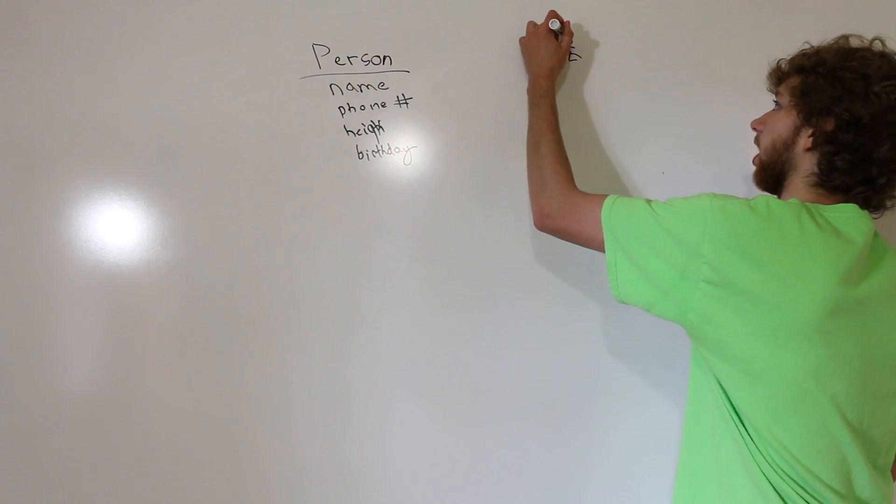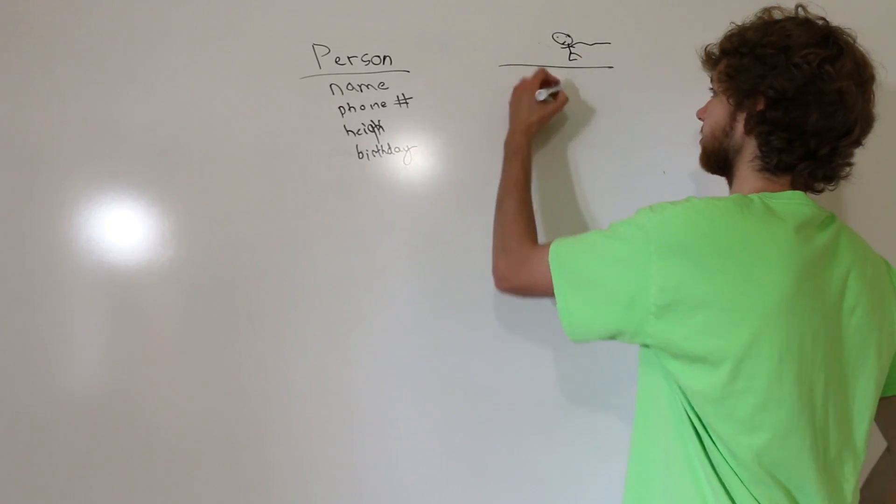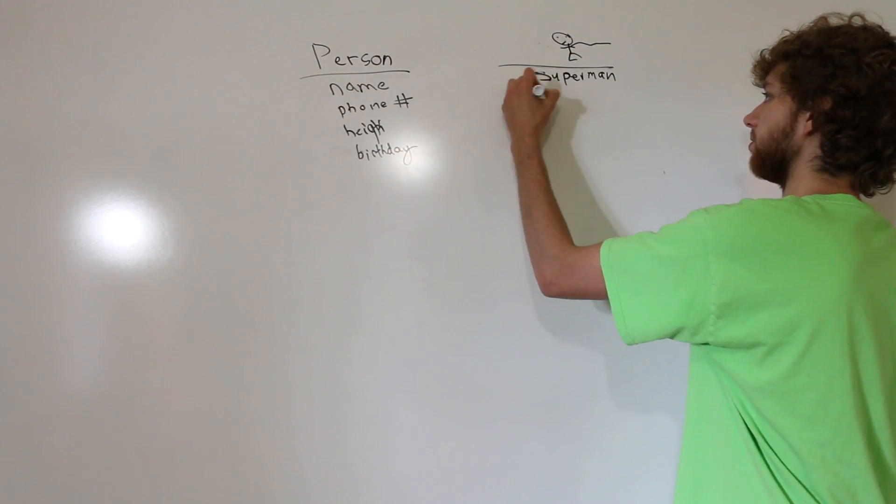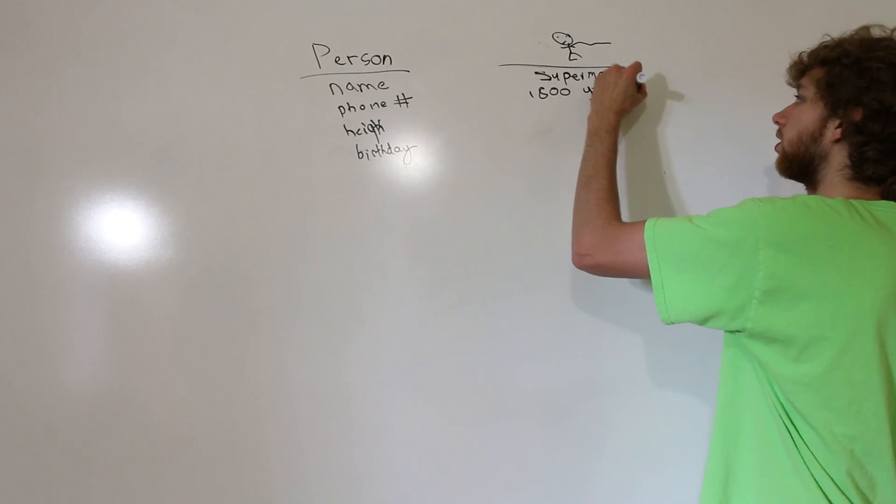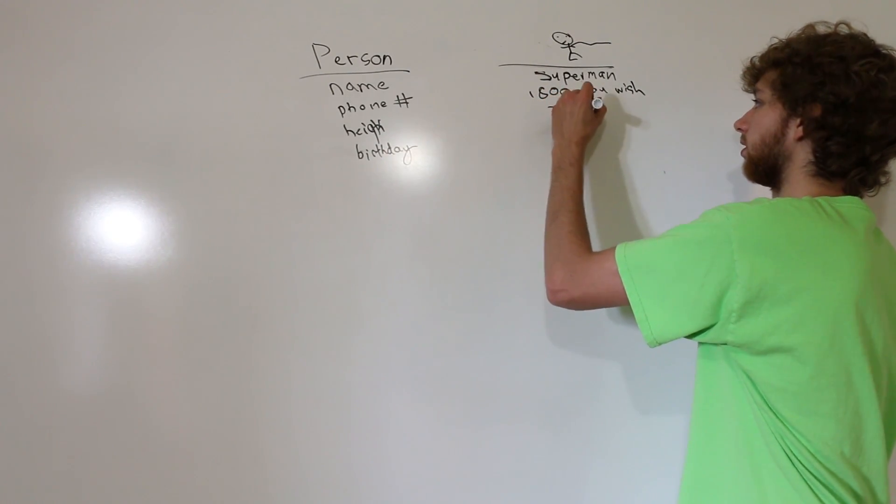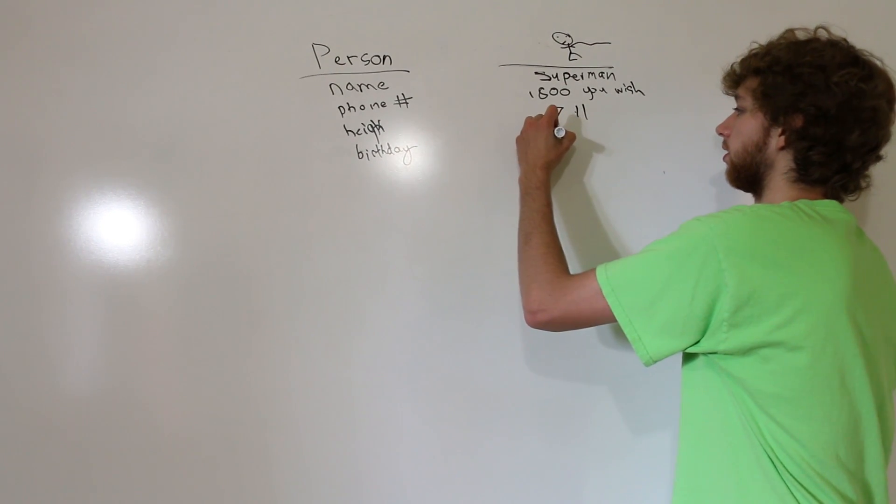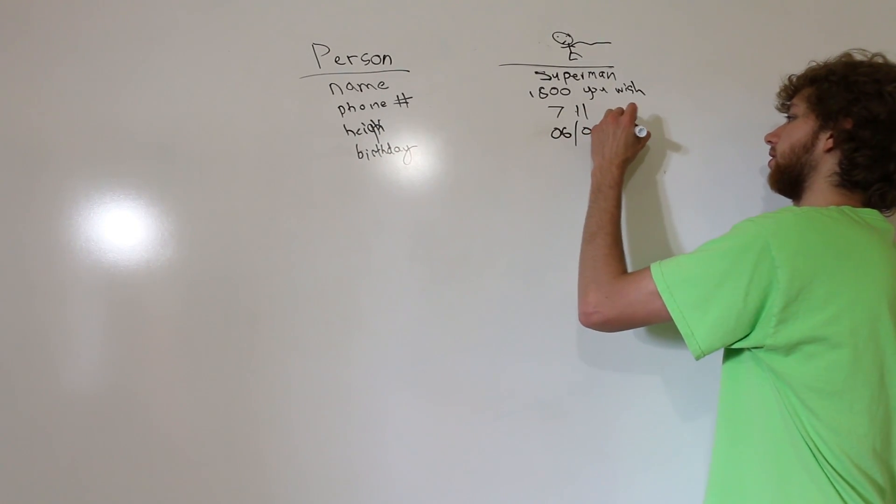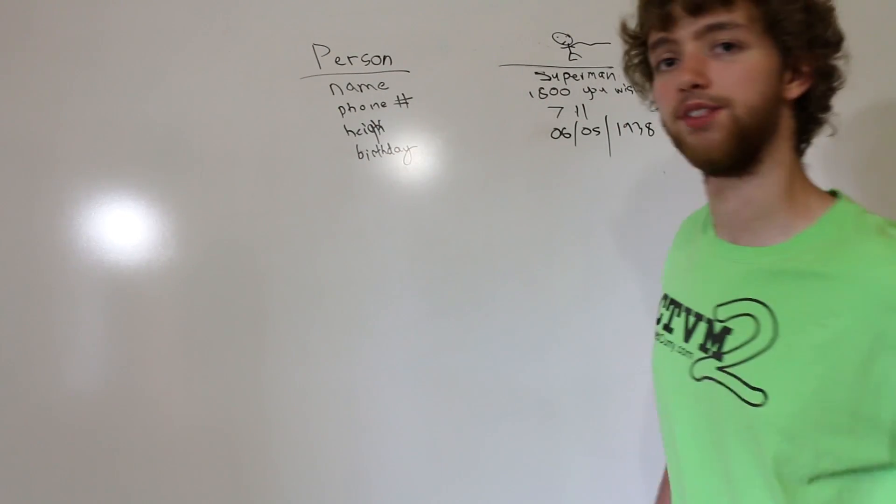Now we have this person - let's draw a picture just to represent him. He's flying through the sky with a cape. This guy's name is Superman. His phone number is 1-800-YOU-WISH. His height, probably like 7 foot 11. Birthday, well I don't know, so let's just go with like June 5th, 1938. This is generic, this is specific.